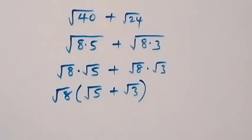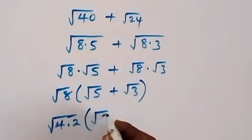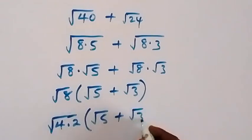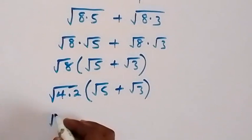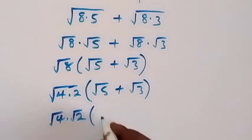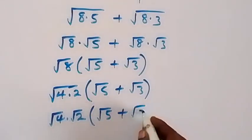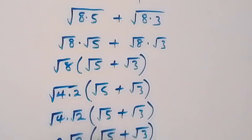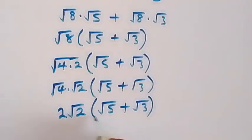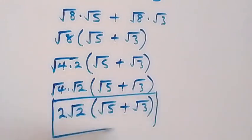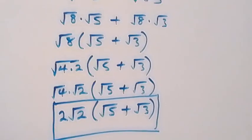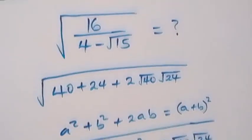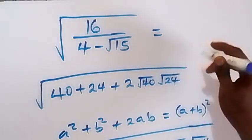Root 8 is the same as root 4 times root 2, giving us root 4 times root 2 times (root 5 plus root 3). Root 4 is 2, so this becomes 2 root 2 times (root 5 plus root 3). Here we have the simplified form of this problem: 2 root 2 into bracket root 5 plus root 3.